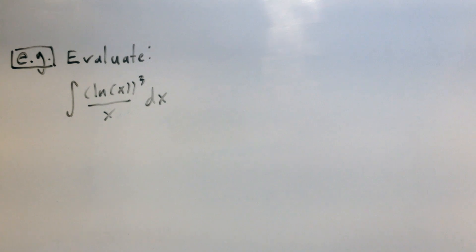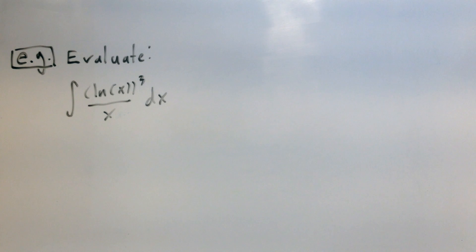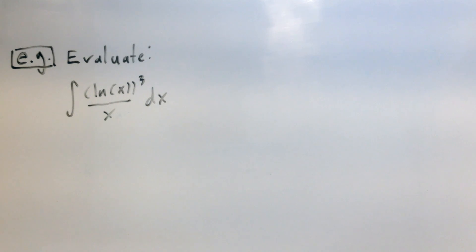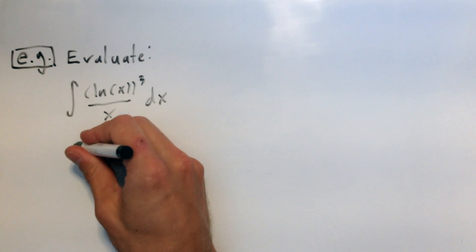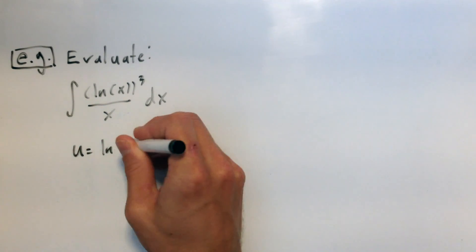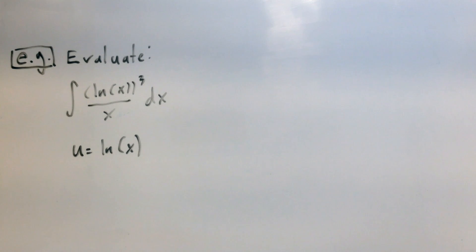Well, a quotient is really just a product of one function and its reciprocal, so it really is a product. But more importantly, there is composition here. We have the function natural log of x being raised to the third power, so log of x is the inside function and the third power is the outside function. That suggests we want to try a substitution, specifically letting u equal to the natural log of x, because that's what's inside.